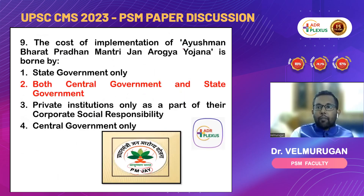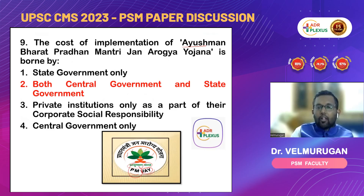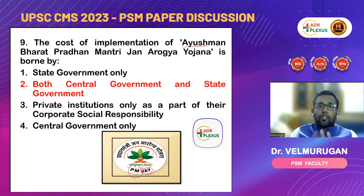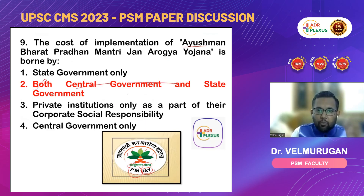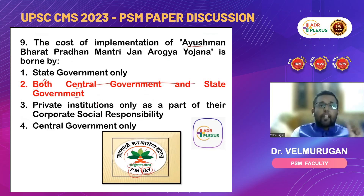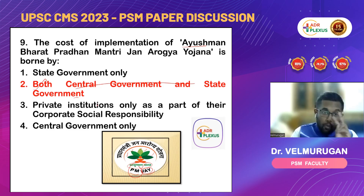Next question: the cost of implementation of Ayushman Bharat Pradhan Mantri Jan Arogya Yojana. Although we discussed only the 5 lakhs health insurance, this 5 lakhs health insurance is actually funded by both the central government as well as the state government.